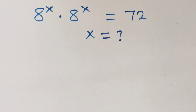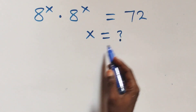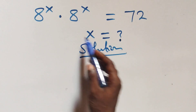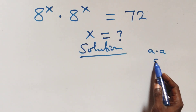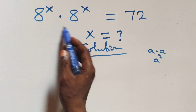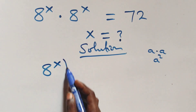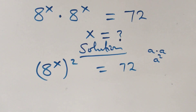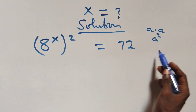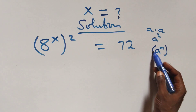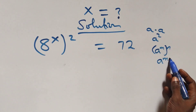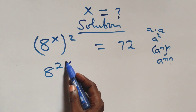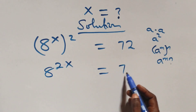Welcome to solving this nice exponential equation. What we have here is a times a, which is the same thing as a squared. Multiplying, we have a raised to power x, squared, equals 72. This follows when we have a raised to power n, raised to power n, which is the same thing as a raised to power n times n — the powers multiply — giving us a raised to power 2x equals 72.